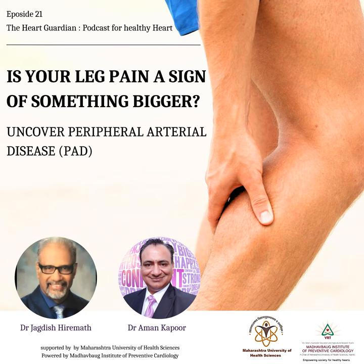Apart from treating the limbs for lack of blood supply and preserving them, treatment of risk factors like diabetes and blood pressure is crucial. Blood thinners like aspirin are also important, along with cholesterol-lowering drugs — the statins. If a person has peripheral arterial disease in India, it means atherosclerosis is quite advanced and they are likely to have disease of the coronary arteries and probably of the carotid arteries of the brain. This polyvascular disease is a dangerous one and needs to be treated aggressively.